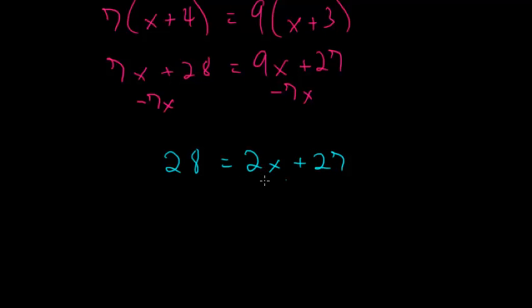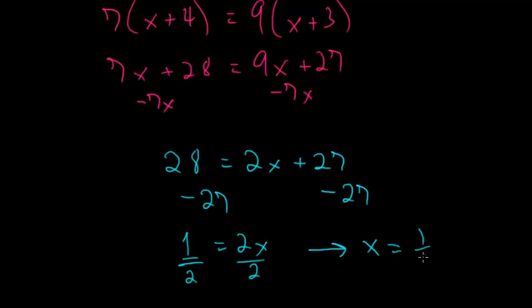I want to get the x's by themselves, so I can subtract 27 from each side. So I have 1 is equal to 2x. Now dividing by 2 on each side will give me my answer. So the answer therefore is x is equal to 1/2.